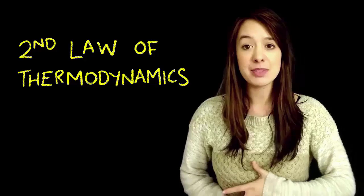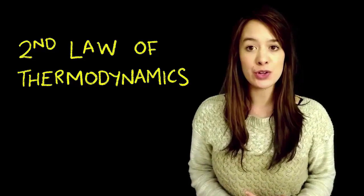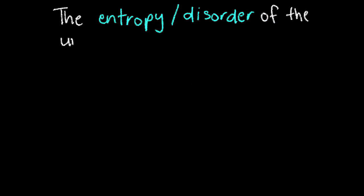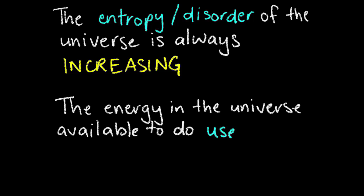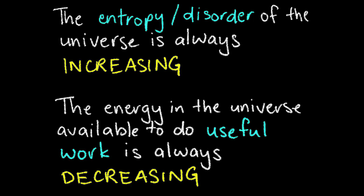The second law of thermodynamics comes in many forms, but the most well-known is that the entropy or disorder of the universe is always increasing. But this can also be rephrased as the energy in the universe available to do useful work is always decreasing.